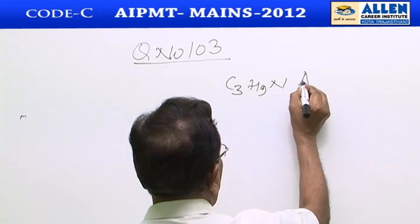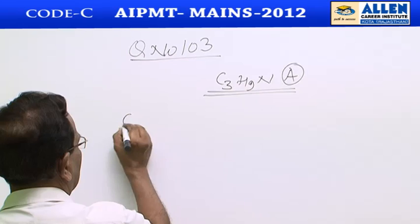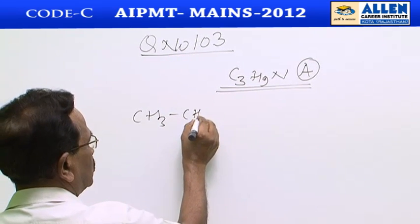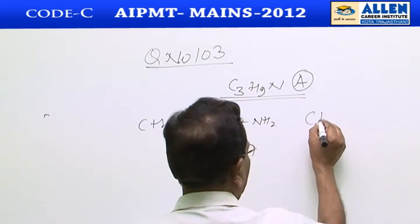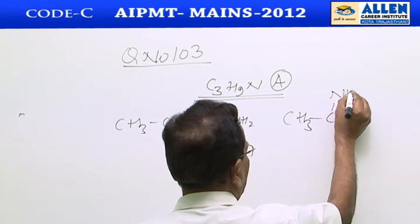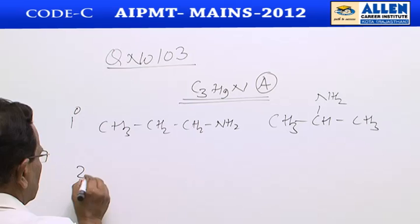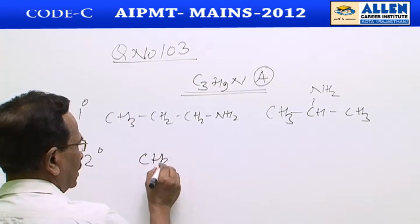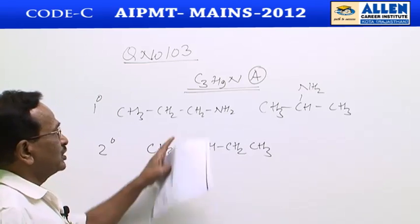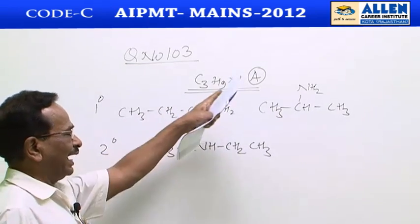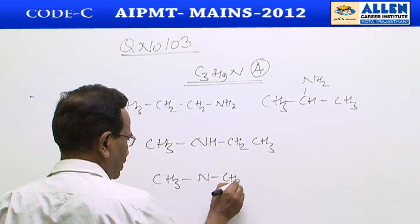This molecular formula C3H9N has four isomers. Two are primary amines: CH3CH2CH2NH2 and CH3CHNH2CH3. It also shows a secondary amine structure: CH3NHCH2CH3. And a tertiary amine: CH3NCH3CH3.